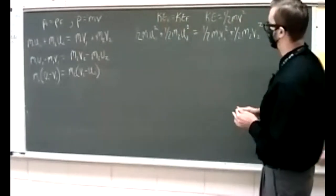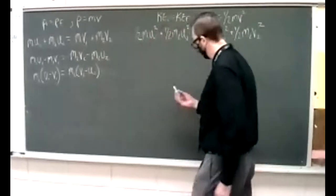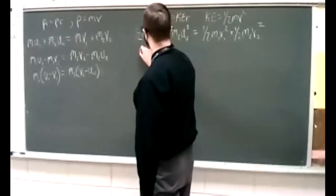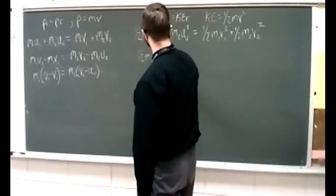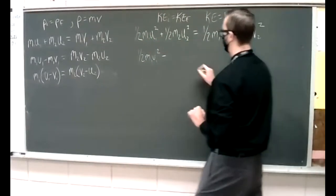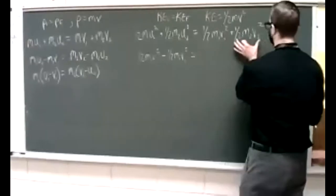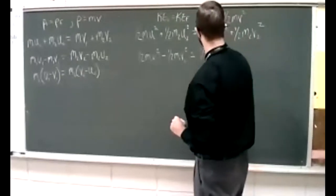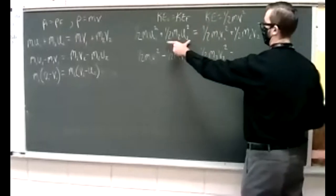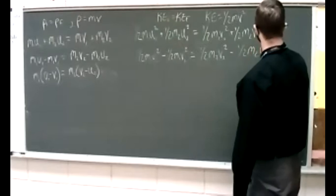Now let's do the same thing over here with the kinetic energy equation. Get the M1 terms together on the left: one half M1 U1 squared minus one half M1 V1 squared equals one half M2 V2 squared minus one half M2 U2 squared.